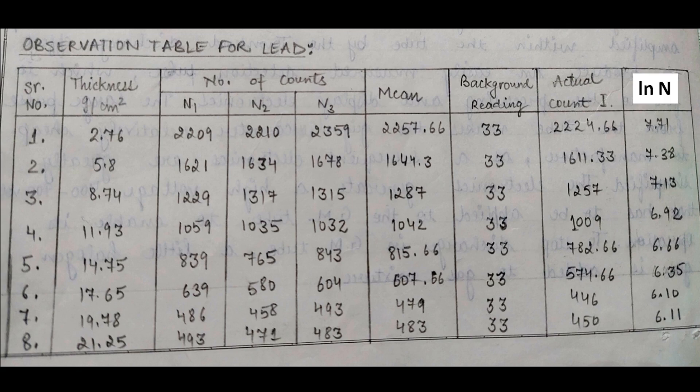After setting the GM counter at its operating voltage, you have to make this kind of observation table. For example, if the thickness is measured in grams per centimeter square, you can take three sets of readings for the counts in the presence of source for that particular thickness, and thereafter you can take the mean. Also calculate the background reading – the background readings will be the counts in the absence of source. Then you can calculate the actual counts, which is calculated by mean minus the background reading. And finally, for the last column, you can calculate the log of the actual counts.